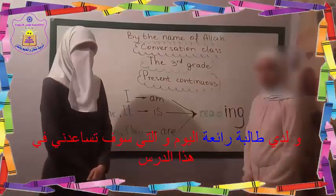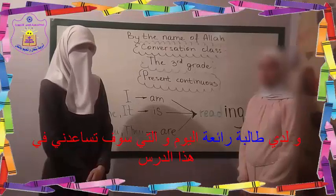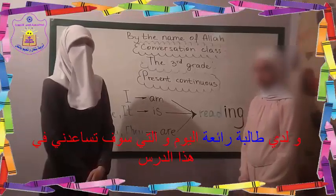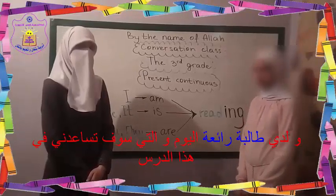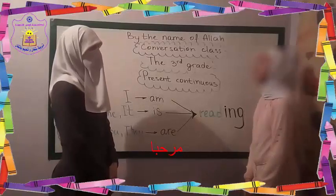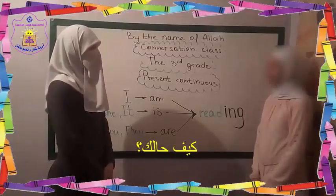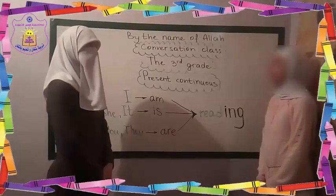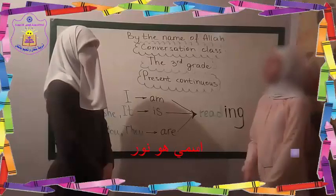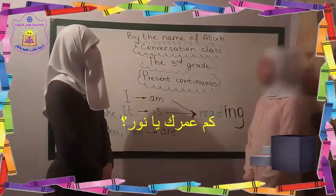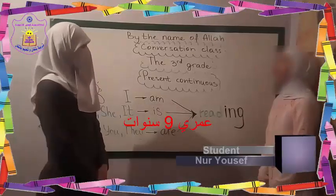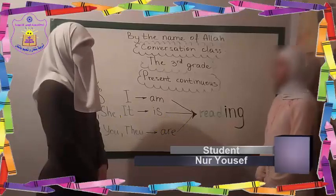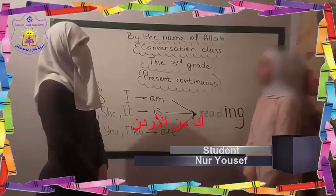Today I have a great student with me who will help me with my lesson. Hello! Hello! How are you? I am good, thank you. What's your name? My name is Noor. How old are you, Noor? I am nine years old. Where are you from, Noor? I am from Jordan.